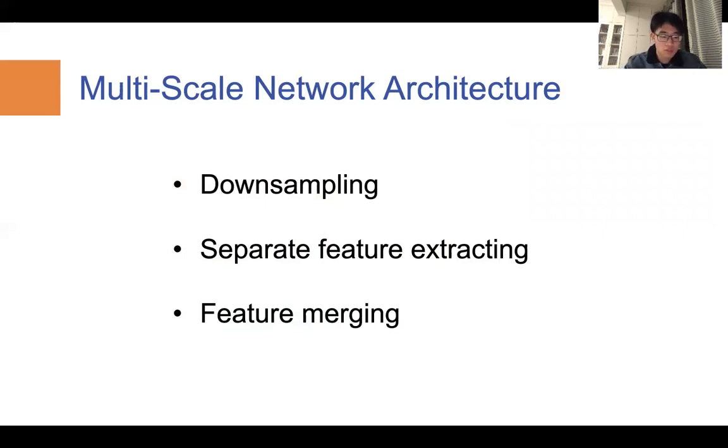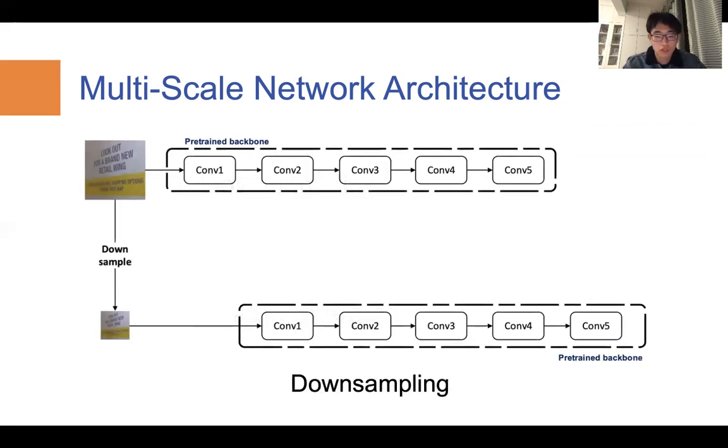The input images are first downsampled to its half, and then both images are forwarded to the pre-trained backbone. Here, I chose ResNet V1 50. Then, the features extracted pass through a U-shaped pipeline, and features with the same width and height are concatenated together.